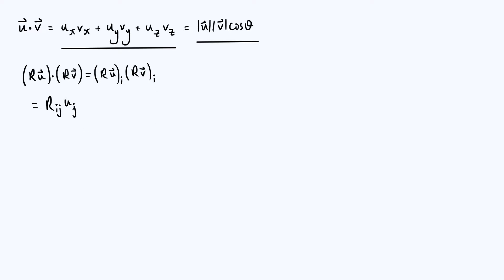Similarly, for the second vector Rv, I write that as R_ik · v_k — using k rather than j since we've already used j. So we're summing over a different index here. Regrouping the terms, this is the same as R_ij · R_ik · u_j · v_k. We're free to do that because all of these individual numbers are scalars, so we can multiply them together in any order and then sum over the indices.